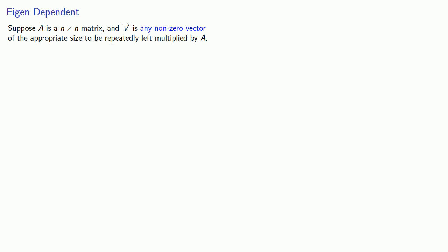Then there is a least value K for which the set V, AV, A squared V, and so on, is dependent. And that's because, since V is in R^n, then any set of n plus 1 vectors must be dependent.